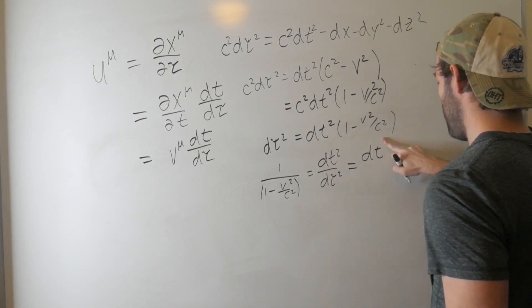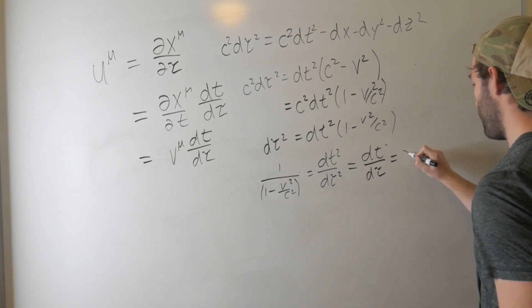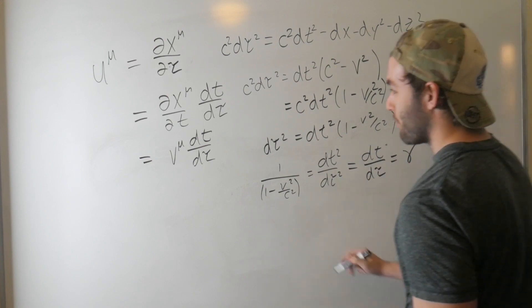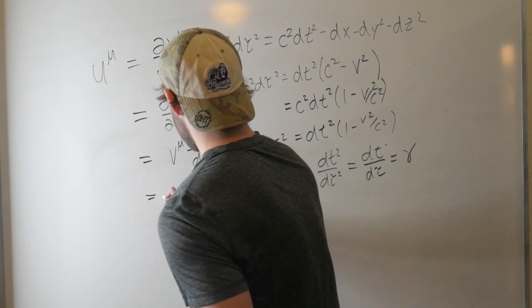So, dt over dτ is just equal to the Lorentz factor, γ. That's pretty cool. I thought that was pretty cool when I first saw it. So, that tells us that our four velocity is just equal to...